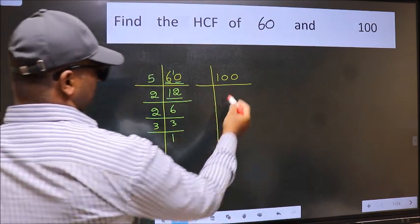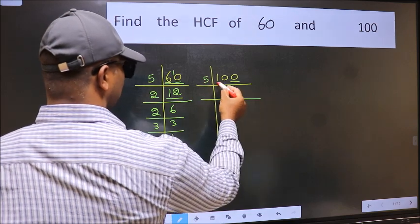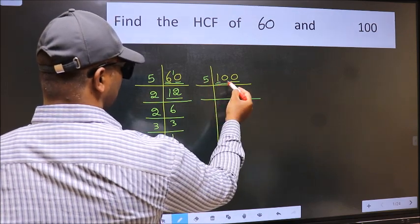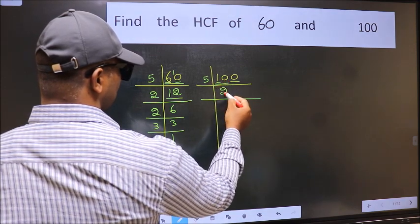Now the other number. Last digit is 0, so take 5. The first number 1 is smaller than 5, so we have 10. When do we get 10 in the 5 table? 5 times 2 is 10.